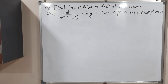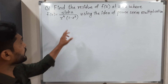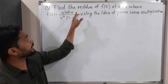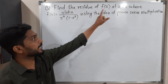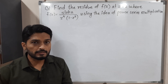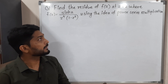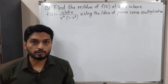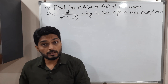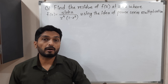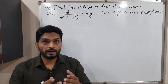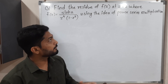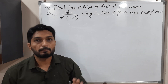Hi everyone. In this video we are going to discuss this example. They have given one function to us. We had to find the residue of this function at z equals 0. The different part in this example is we have to use the idea of power series multiplication. In the previous video we saw how to use power series division to find the Laurent series expansion and how to find residue. This time we have to use power series multiplication.